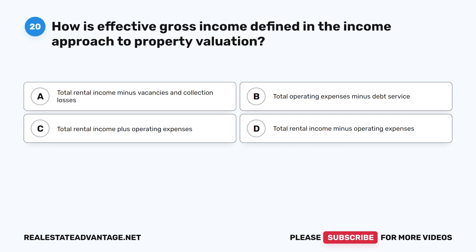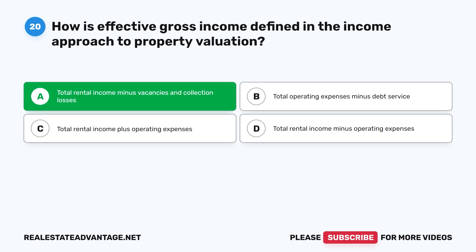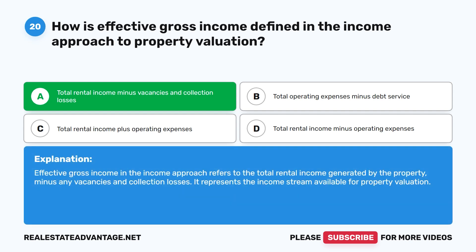Question 20: The correct answer is A: Total rental income minus vacancies and collection losses. Effective gross income in the income approach refers to the total rental income generated by the property minus any vacancies and collection losses. It represents the income stream available for property valuation.